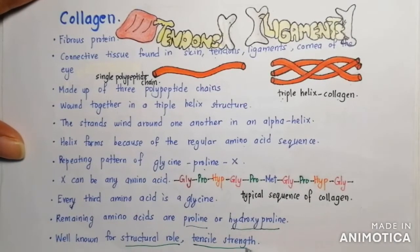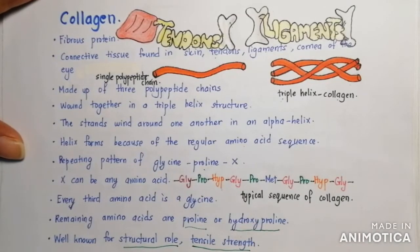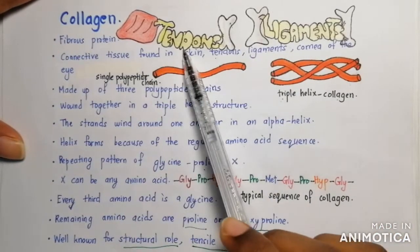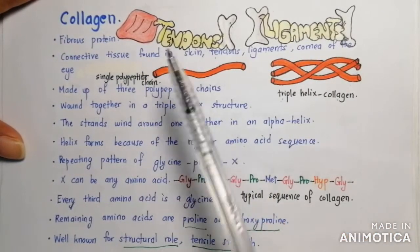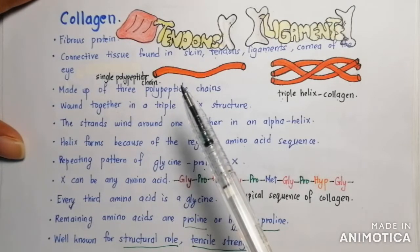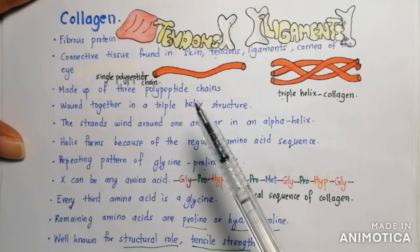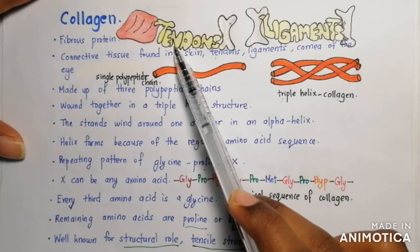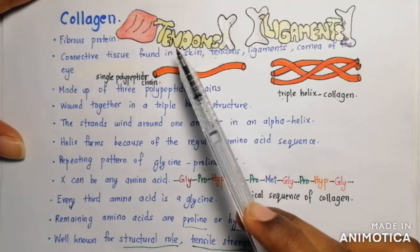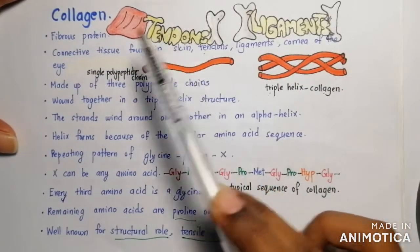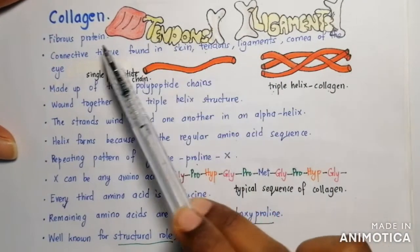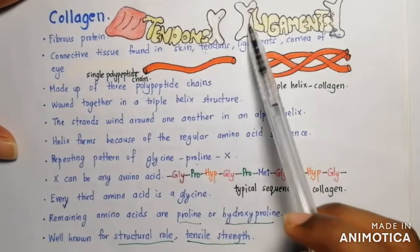Collagen is well known for its structural role and tensile strength. Tensile strength means the amount of tension it can withstand without breaking or tearing. For example, collagen is high in tendons and ligaments. If you lift a dumbbell that is more than the weight you are supposed to lift, you may have a tissue tear — this tear is probably in the tendons or ligaments — therefore collagen provides high tensile strength for connective tissue, especially tendons and ligaments.